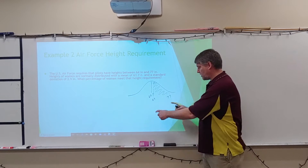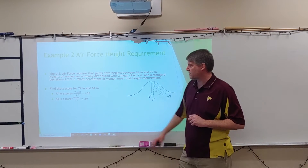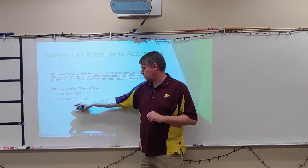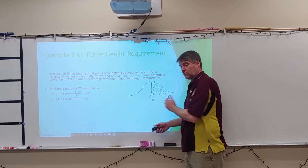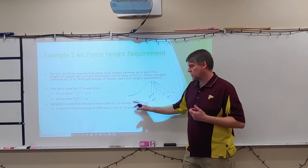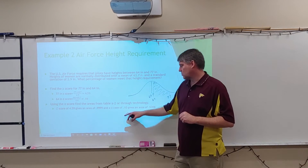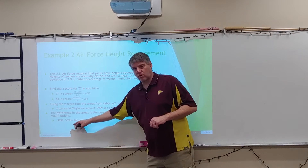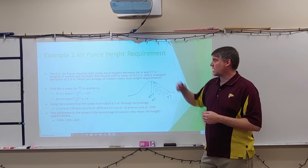I need to calculate z-scores for both boundaries. The z-score for 77 inches is 77 minus 63.7 over 2.9, which is 4.59. The z-score for 64 is 64 minus 63.7 over 2.9, which is 0.10. Using a z-score table or technology, a z-score of 4.59 gives an area of 0.9999, and a z-score of 0.10 gives an area of 0.5398. Subtracting those, the difference is 0.4601 — so about 46% of women fall within these height requirements for flight.